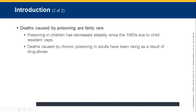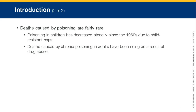Deaths caused by poisoning are fairly rare. Poisoning in children has decreased steadily since the 1960s due to child-resistant caps. However, deaths caused by chronic poisoning in adults have been rising as a result of drug abuse.